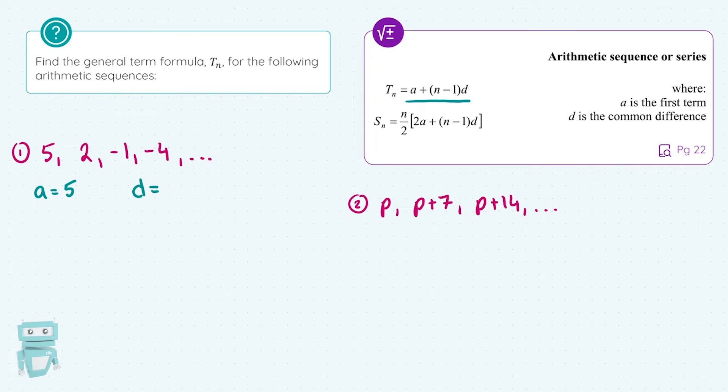And to get D, what we can do is we can see what happens. How do we get from the first term to the second term? Well, we can take them away: 2 take away 5, which equals minus 3. Or we could subtract off any other two consecutive terms. We could do minus 4, minus minus 1, to get minus 3 also. So D is the common difference. It's your second term take away your first term, or your third term take away your second term, and so on.